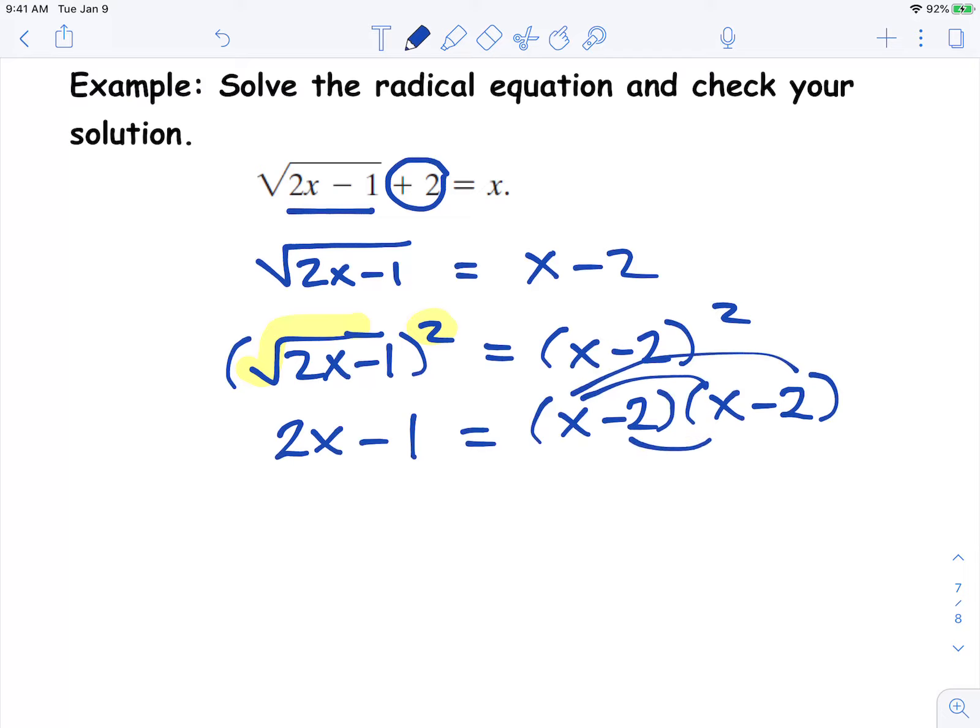First, outside, inside, last. So the left side stays as 2x minus 1. The right side is first, outside, inside, last.